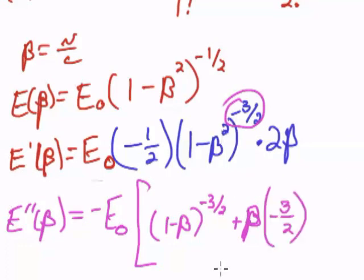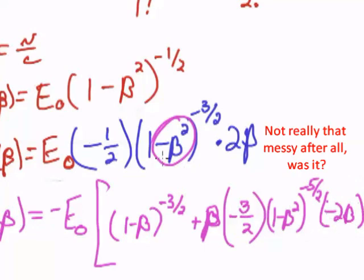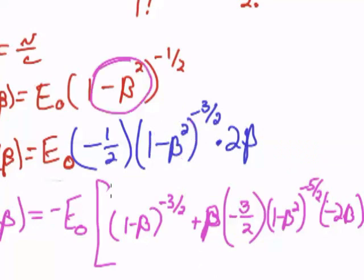We'll take the negative 3 halves times 1 minus beta squared to the negative 5 halves, times the negative 2 beta, and by the way, since I did go through the mess of this, I realized that I had made a prior error, up here, when I took the derivative of negative beta squared, I should have gotten times negative 2 beta here, which means this negative times this negative puts a positive down here.